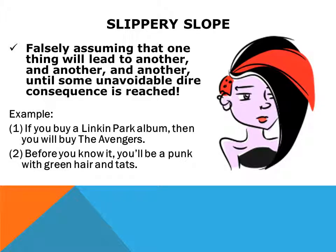Imagine going down a steep hill without brakes. A slippery slope fallacy is somewhat like that. It is a false assumption believing that one thing will lead to another and then another and then another until something really bad happens. It does not allow for the idea that one can stop at any point on the slope — it does not necessarily have to lead to the inevitable bad thing.